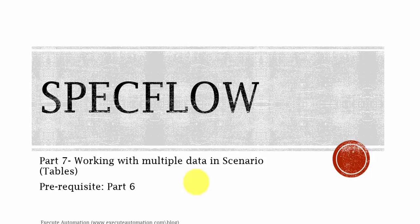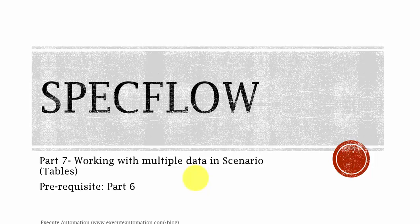Hey, hello guys, this is Karthik from executeautomation.com. This is part 7 of our BDD video series. In this part we are going to work with multiple data in our scenarios. We discussed about scenarios, features, and working with some data in feature files, but we have not worked with a large dataset. There are many situations where we might need to enter a lot of data — for example, filling up an employee form with name, age, phone number, email address, etc. All that data has to come from some data source, or you can directly hard-code it into your feature files. First, we are going to discuss about the hard-coding approach in this video.